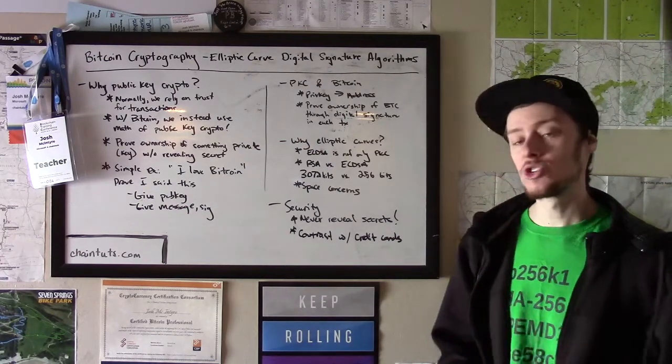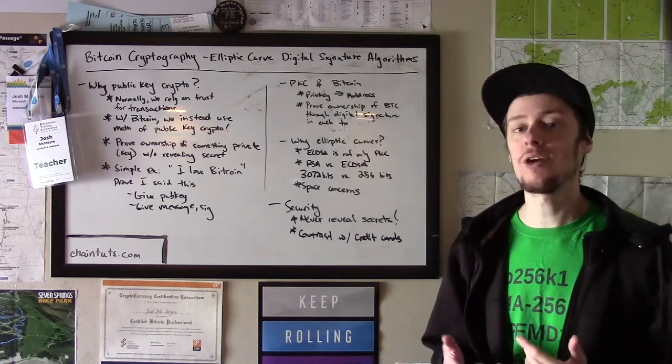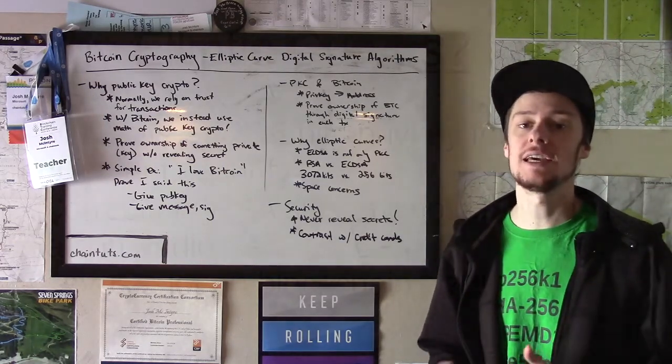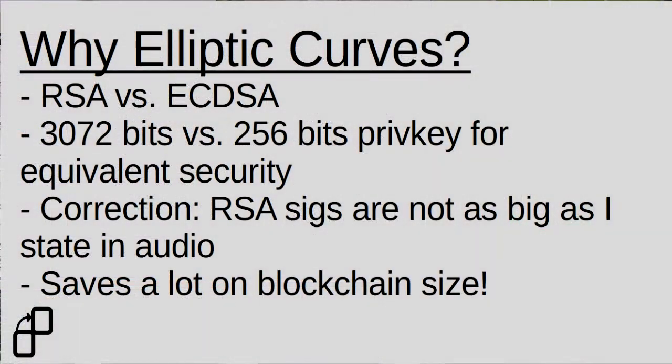And one of those specific advantages is the number of bits needed for the private keys in order to provide an equivalent amount of security against brute force attacks. An RSA key of 3072 bits is equivalent to an elliptic curve private key of only 256 bits.